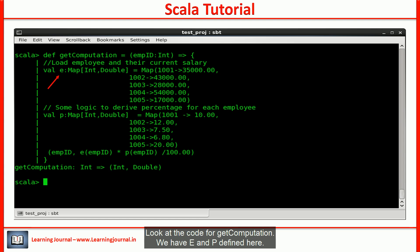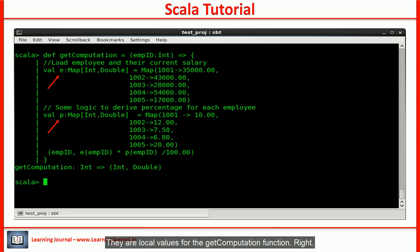Pause the video and think about it. Look at the code for getComputation. We have e and p defined here. They are local values for the getComputation function. Right? But they are free variables for the anonymous function body in the last line.